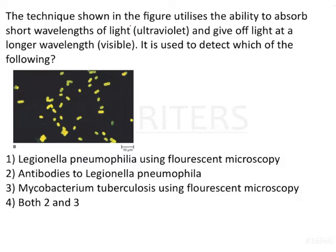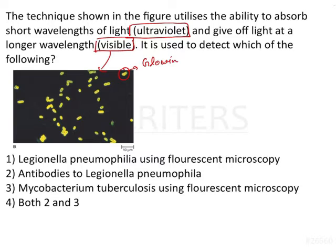The ultraviolet rays are absorbed by the specimen and it emits visible light. And if you see in the slide here, you will be able to see that these organisms look glowing — and glowing means fluorescence. So let me tell you the principle of the fluorescent microscope.